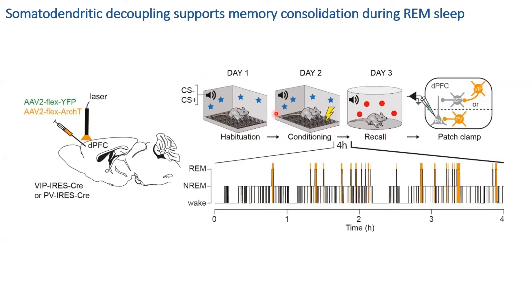The CS-minus is not paired to the foot shock, so it serves as a control cue — the animal learns it predicts safety. Memory is tested by calculating the time animals freeze during sound presentation. Between the conditioning and recall, during the sleep consolidation window selectively during REM sleep for four hours, we perturbed this decoupling — either by inhibiting VIP interneurons optogenetically, blocking dendritic disinhibition, or in a second group by blocking parvalbumin interneurons during REM sleep.